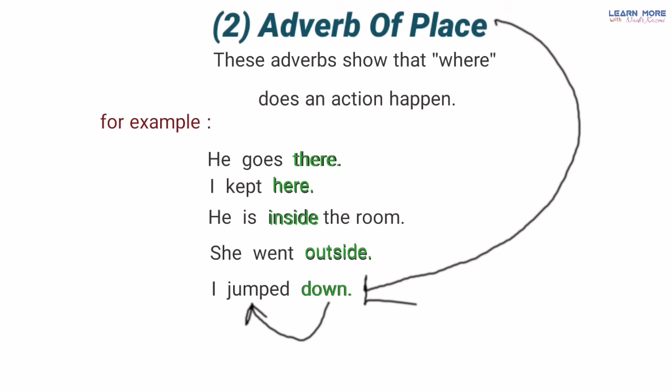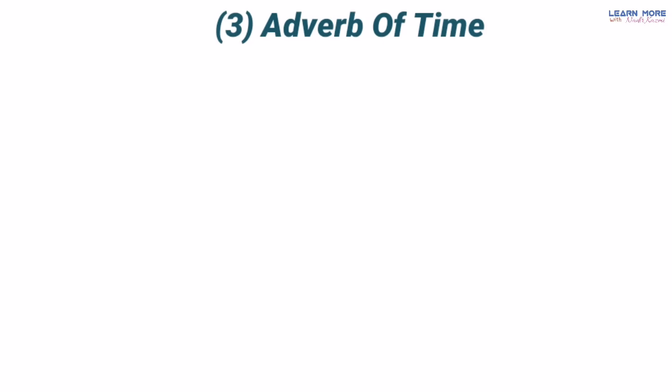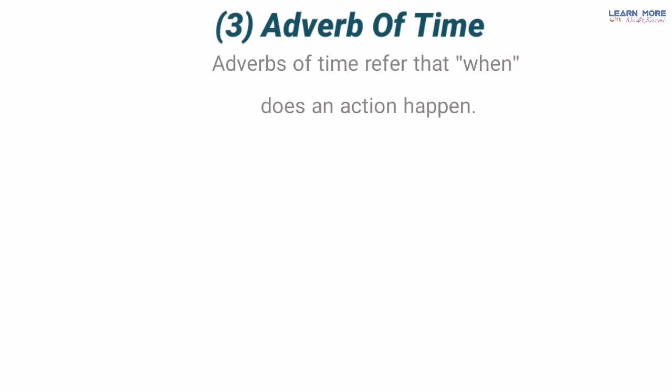Aur number third hai adverb of time. Yeh bhi bahut aasan hai. Jis tarah adverb of place humein kisi jagah ke baare mein bata rahe the ke koi kaam kahan hota hai, usi tarah yeh humein batate hain ke koi kaam kis waqt hota hai, kis samay hota hai. Yani adverb of time refers to when does an action happen — adverb of time humein yeh batate hain, yeh ishara karte hain ke koi kaam kab hota hai, kis time hota hai.